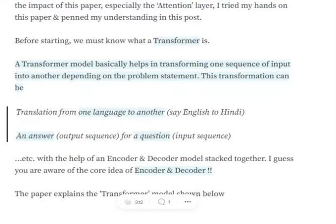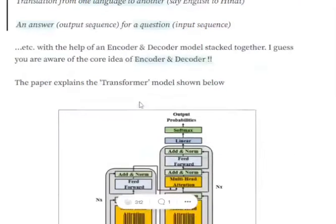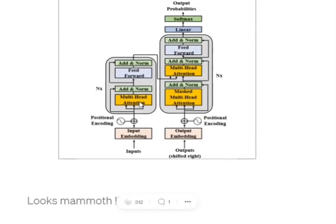Basically, in a Transformer we have two major neural networks working: an encoder and a decoder. Let's first have a brief overview of the encoder and decoder architecture.